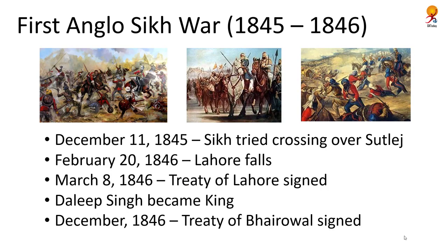The First Anglo-Sikh War broke out when the Sikh army tried to cross the river Sutlej on December 11, 1845. On February 20, 1846, the last city standing — Lahore — fell to British might. The Treaty of Lahore was signed on March 8, 1846. Under this, the Sikhs were to pay the British a war indemnity of Rs. 1 crore, hand over Jalandhar Doab, and cut down their army size. Dalip Singh became king, and Jammu and Kashmir were sold to the British as they could not afford to pay 1 crore otherwise. The Sikhs were unhappy with the loss of Jammu and Kashmir and soon revolted, leading to another treaty in December 1846 called the Treaty of Bhairowwal.